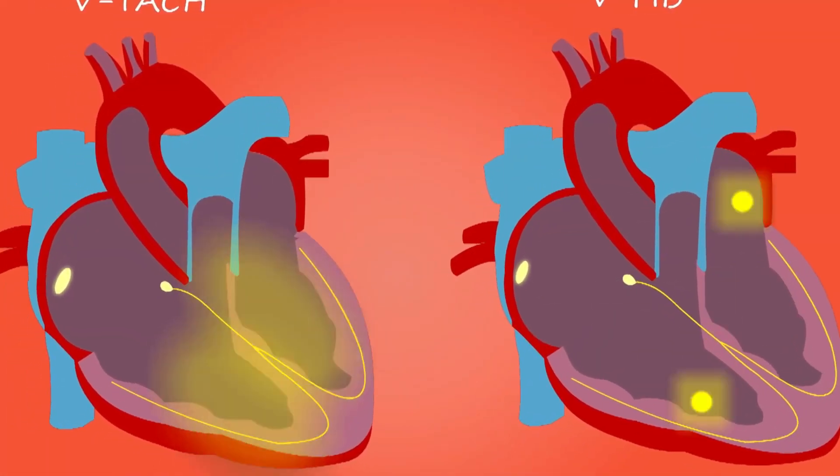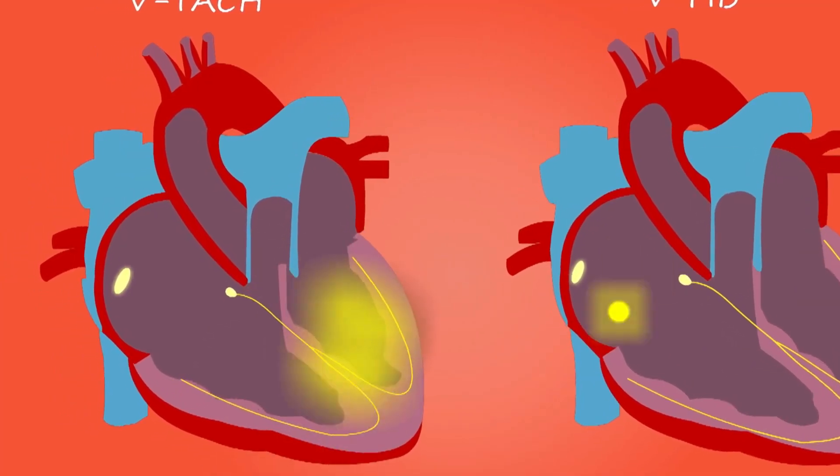Usually VT storm occurs only in patients where pump function is very bad, or where electrolyte abnormality or a new heart attack has led to multiple episodes of VT. In these patients so many episodes occur that even the machine cannot do much — it keeps shocking the patient, the patient keeps going back into ventricular fibrillation, and the patient might even die. If multiple shocks are delivered, the patient must immediately rush to the hospital to get the device interrogated, settings changed, and medicines adjusted.